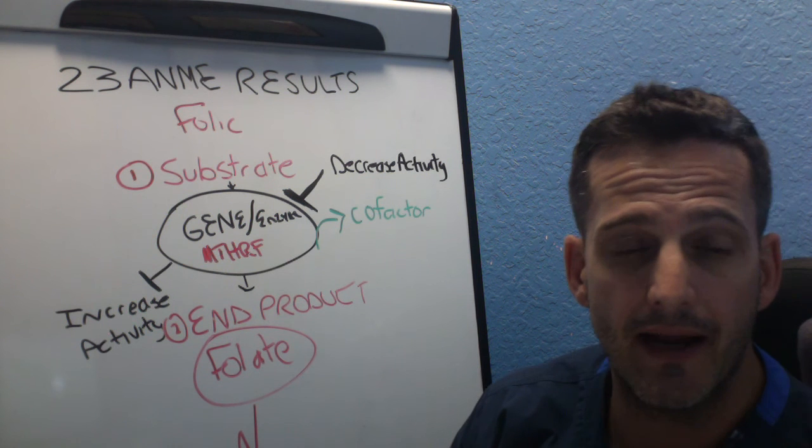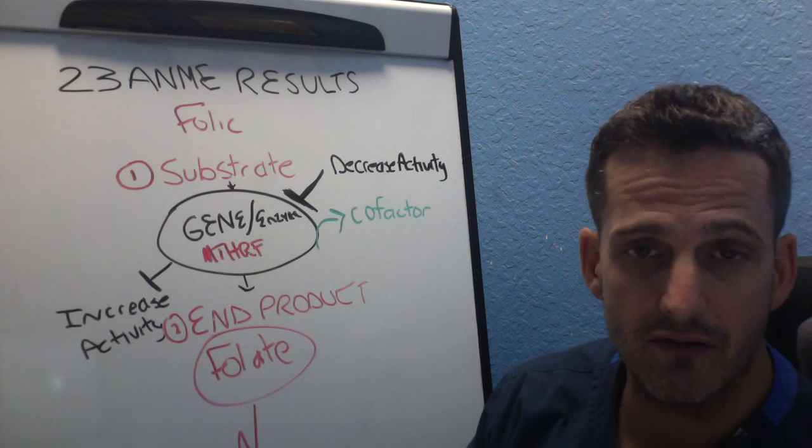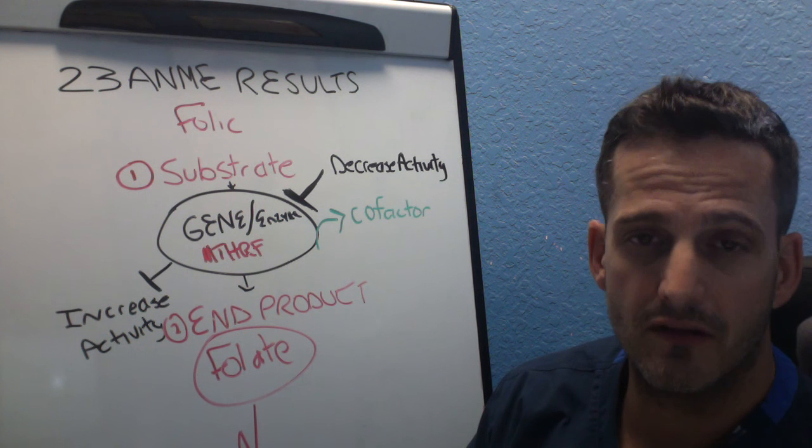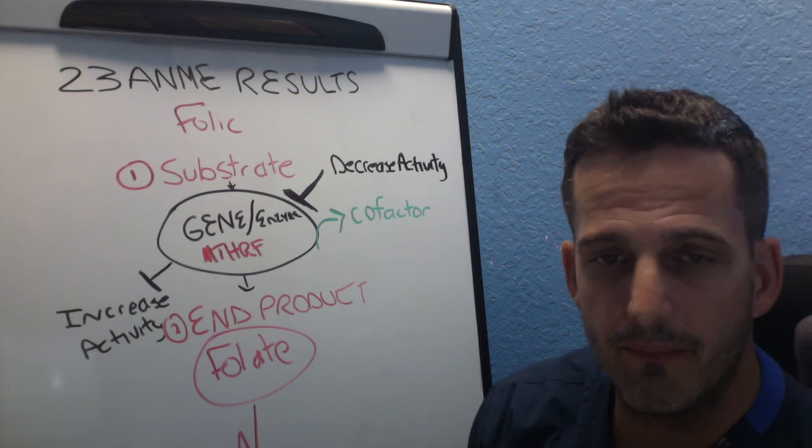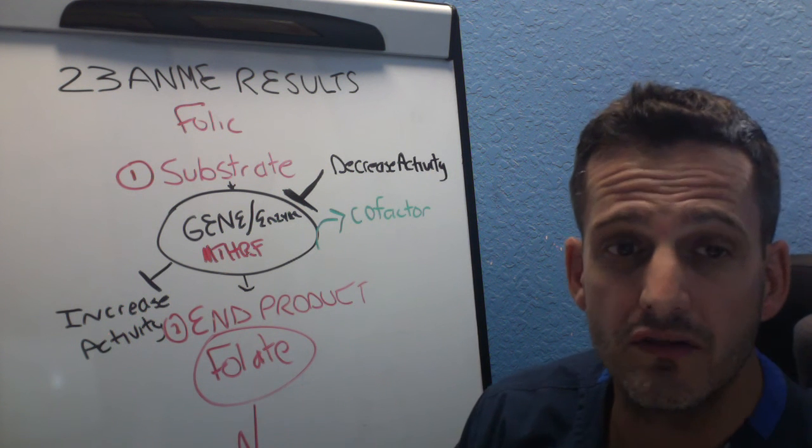And you need those co-factors. Co-factors are things like B1, B2, selenium, ATP, magnesium, and you need proper functioning thyroid hormones to make these co-factors.